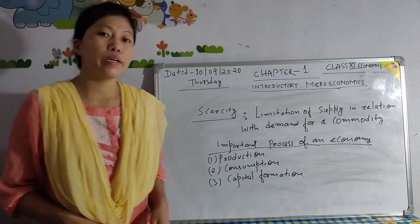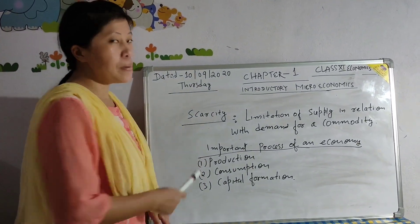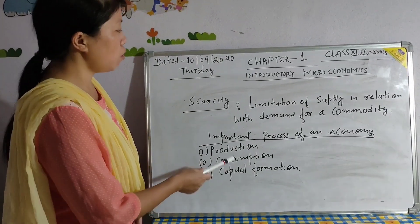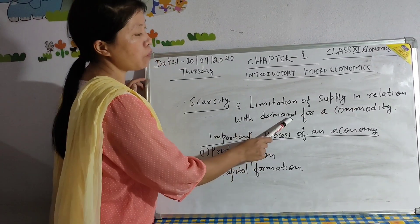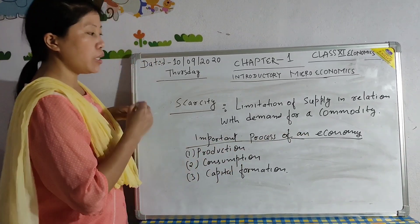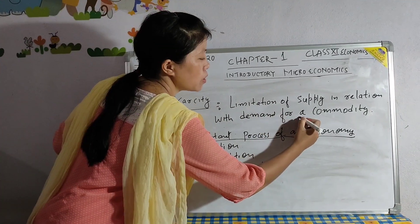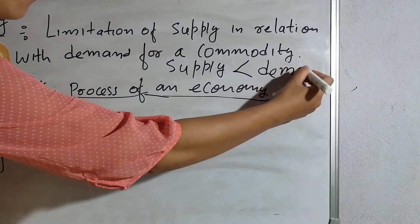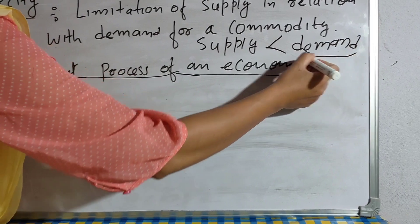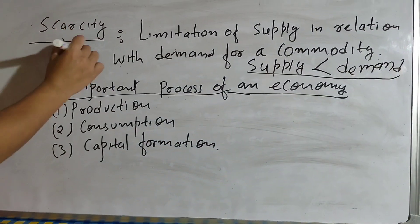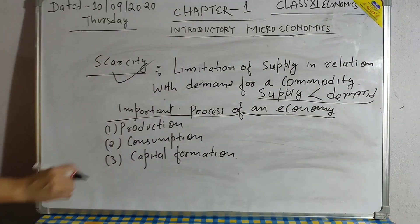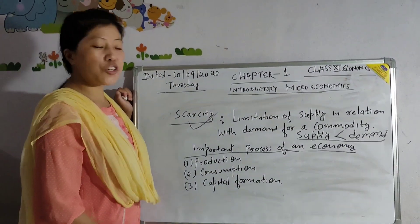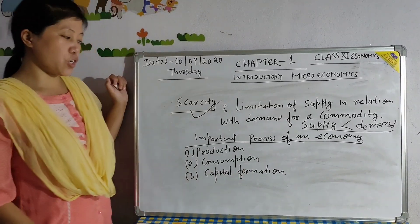The next topic is scarcity. In simple language, scarcity means limited — specifically the limitation of supply in relation to demand for a commodity. It means when supply is less than demand, that is the situation of scarcity in an economy. And the three most important processes of an economy are production, consumption, and capital formation.